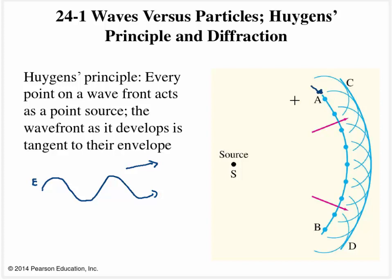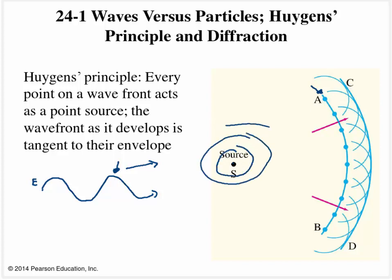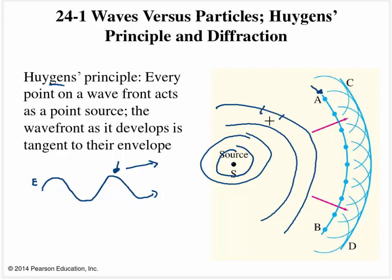The wave crests are going to be represented by these blue lines. Picture a source — we'll be looking at the location of this crest right here. We can even think of it as a mechanical wave: say we threw a stone into a pond and we're going to see the crests come outward away from the source. What Huygens' Principle says is we can treat any given piece of this wave front as an individual source.